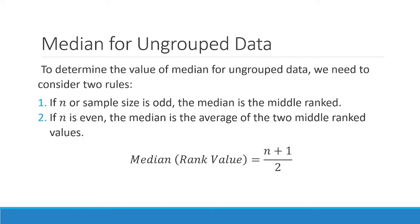Going into the computation itself. Just like mean, we have two ways to compute for the median: median for ungrouped data and median for grouped data. To determine the value of the median from ungrouped data, we need to consider two rules depending on the number of samples. If n or sample size is odd, the median is the middle value.